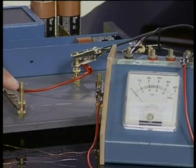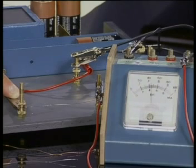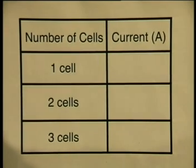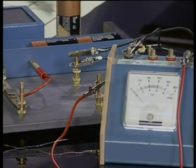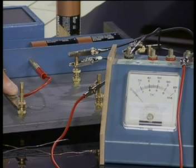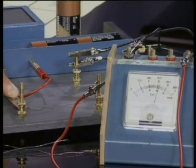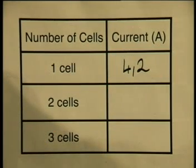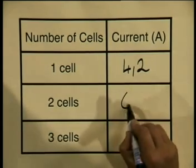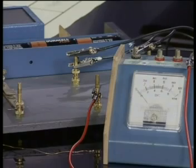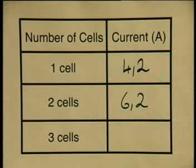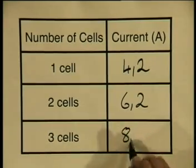I will now close the switch to complete the circuit. Note that the ammeter reading is stabilizing at roundabout 4.2 amperes. Notice that I've now put two cells into the electrical circuit. I close the circuit, and we notice that the ammeter reading has stabilized at about 6.2 amperes. So for two cells we have a current reading of 6.2 amperes. I've now put three cells into my electrical circuit. I close the switch, and the reading is 8.2 amperes. Using three cells, our current reading is 8.2 amperes.